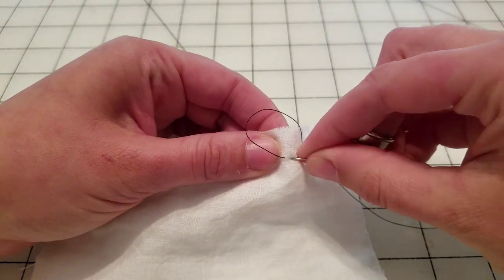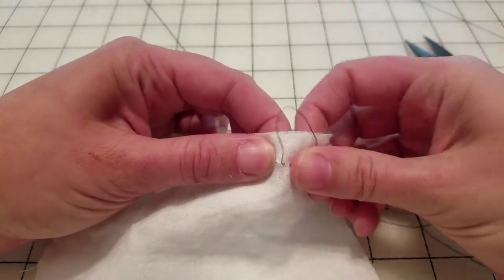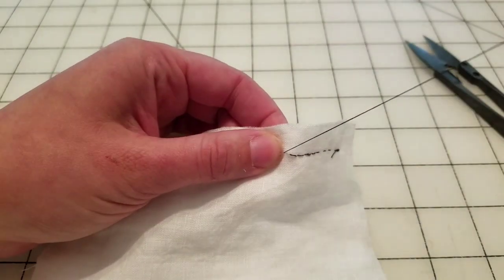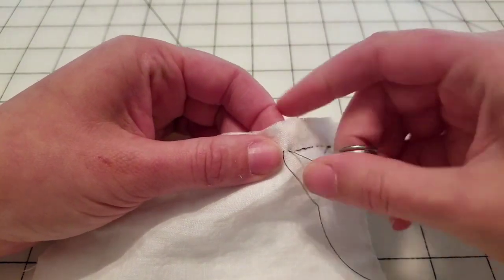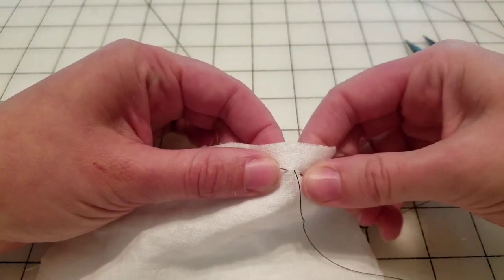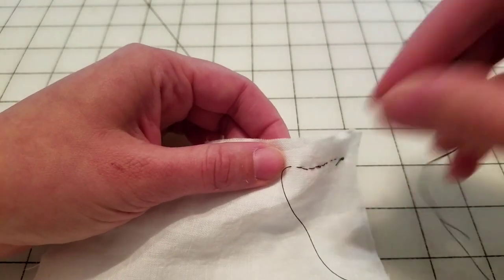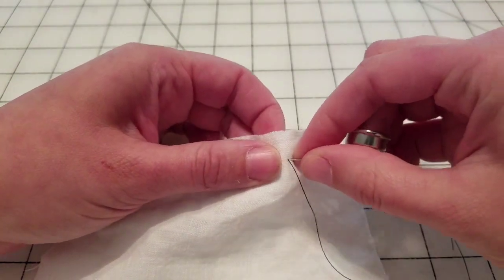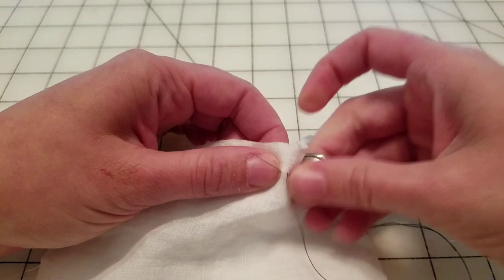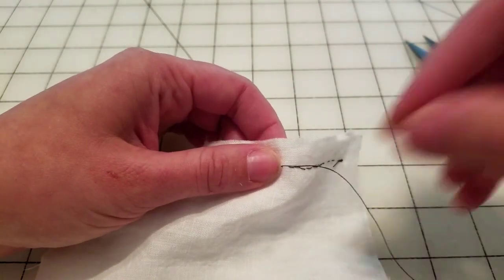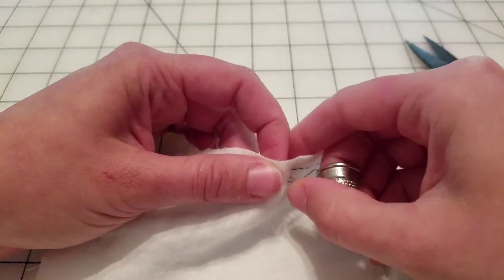Because backstitch, in any hand sewing, you're actually weaving the two pieces of fabric together with thread, as opposed to machine sewing, which just holds the fabric together using the thread wrapped around itself and in tension.